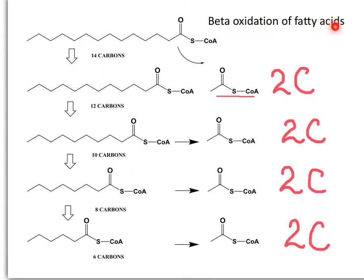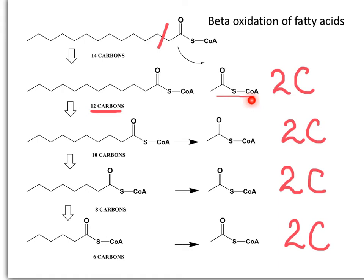Fatty acids are metabolized by a different process. The long hydrocarbon chain of fatty acids needs to be activated by combining the fatty acid with coenzyme A. Once activated, it will be cleaved in a fashion of two carbons at a time. In every round, a two-carbon unit of acetyl-coenzyme A will be released, and the hydrocarbon chain is shortened by two carbons.